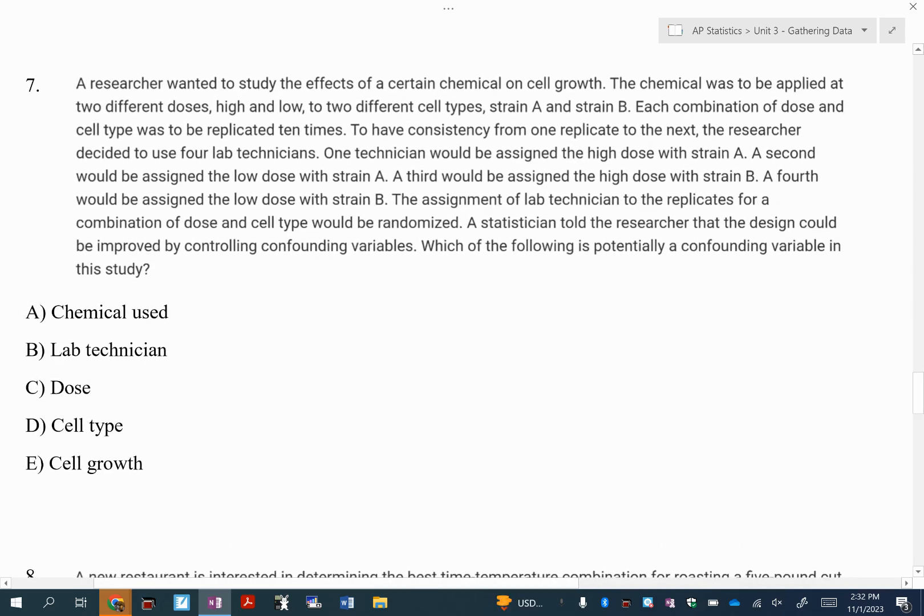Okay, now the last four we definitely need to go over. I chose this one knowing we've probably struggled with this. This idea of confounding is tough to understand. So the idea here is there's something going on in this procedure for this experiment that could impact the results that doesn't need to happen in this way.